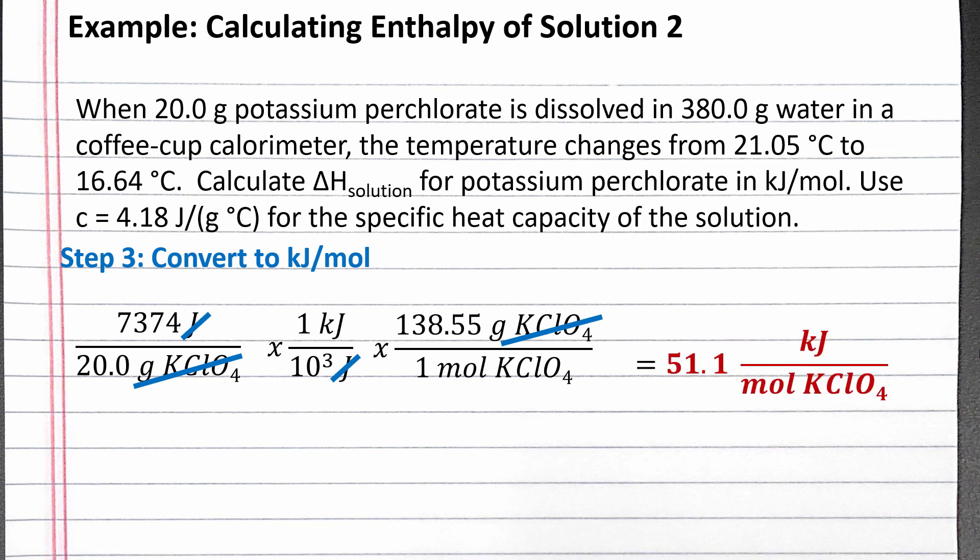Completing the calculation, we get positive 51.1 kilojoules per mole of potassium perchlorate as the enthalpy of solution. The positive enthalpy indicates the dissolving process is endothermic.